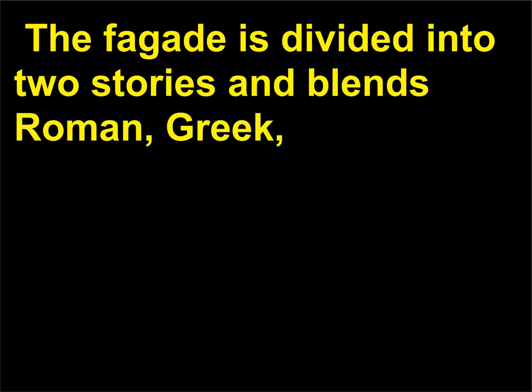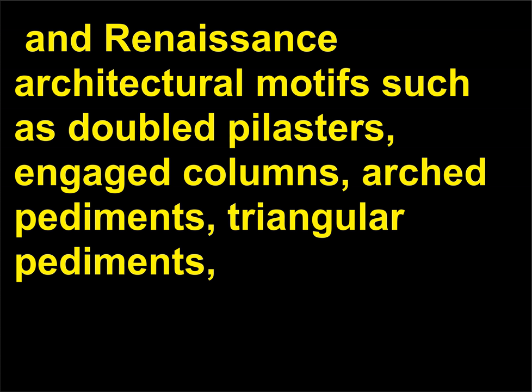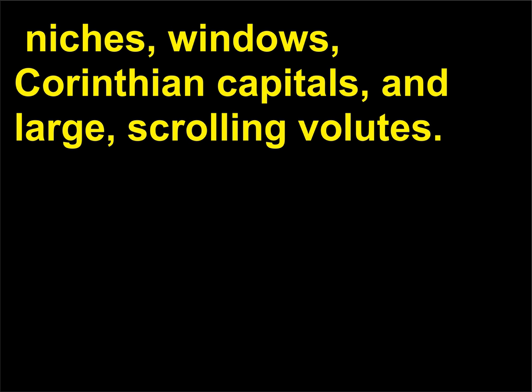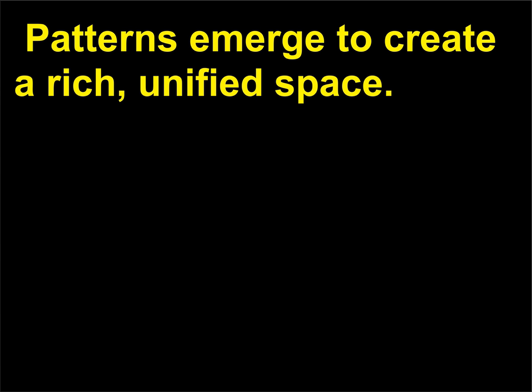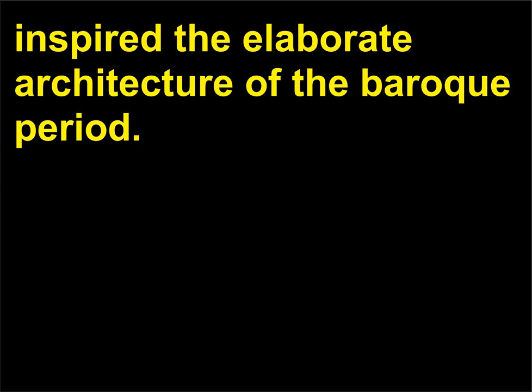The facade is divided into two stories and blends Roman, Greek, and Renaissance architectural motifs such as doubled pilasters, engaged columns, arched pediments, triangular pediments, niches, windows, Corinthian capitals, and large scrolling volutes. Despite the many disparate elements, the church facade is not overwhelming or chaotic — patterns emerge to create a rich, unified space. The ornamental facade of the Church of Il Gesù greatly inspired the elaborate architecture of the Baroque period.